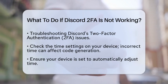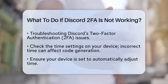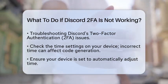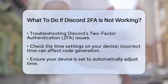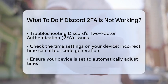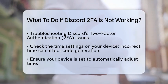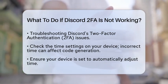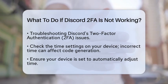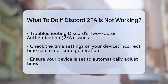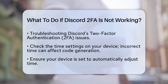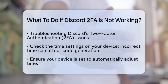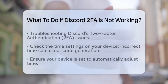First, check the time on your device. Many two-factor authentication systems, like Google Authenticator or Authy, depend on time-based one-time passwords. If your device's time is off, the codes generated might not work. Make sure your device is set to automatically adjust the time in your settings.